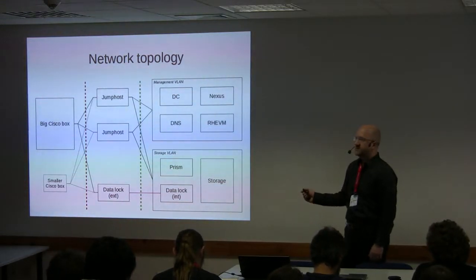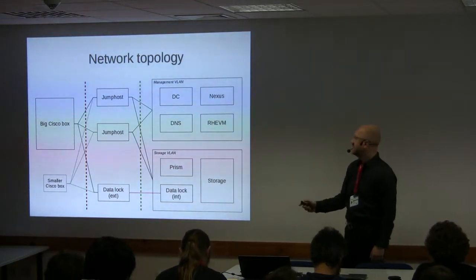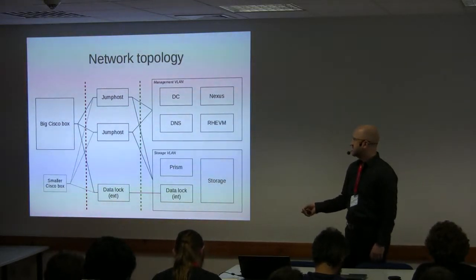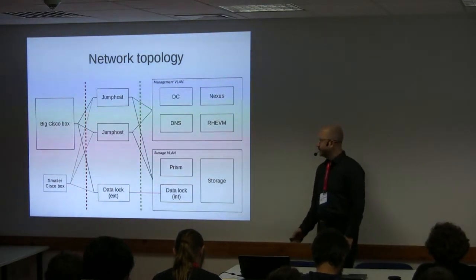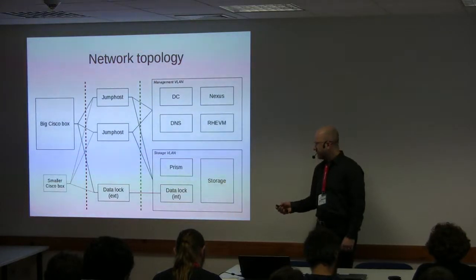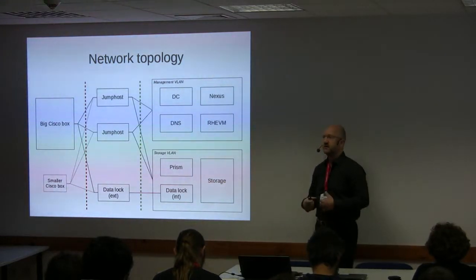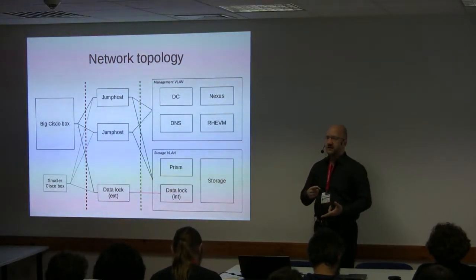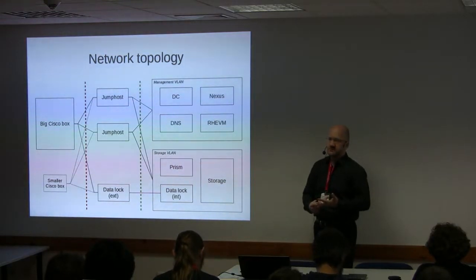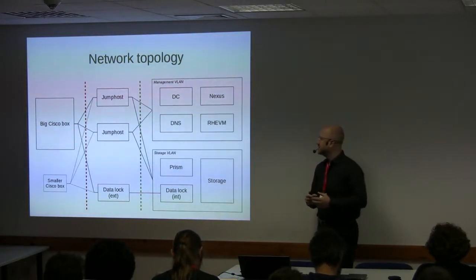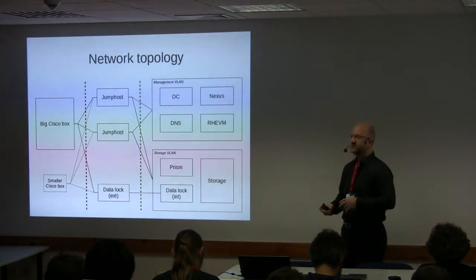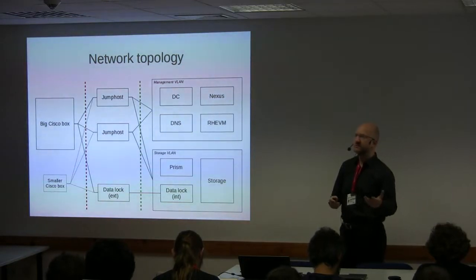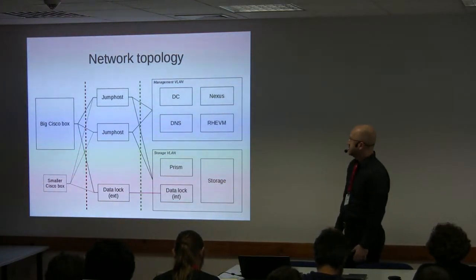The IPv4 network is private address space and not routed, whereas the IPv6 network is a public address space and is partially routed so that machines on the inside can retrieve security updates and install software within certain limits. Some of our machines need to access licensed servers on the outside — some can be proxied and some can't.